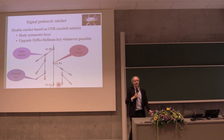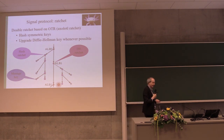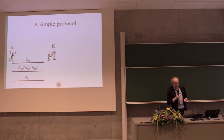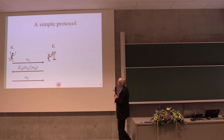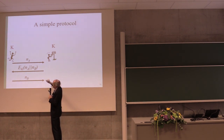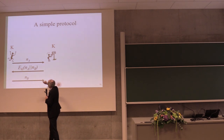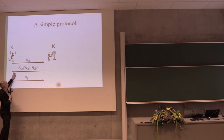Beyond forward secrecy you now also have post-compromise security. To end this part, here is a simple protocol for entity authentication. Alice sends a nonce to Bob. Alice and Bob share a secret key. Bob encrypts this nonce together with his own nonce and sends it back to Alice. Alice decrypts and knows this can only have come from Bob, because only Bob knows this key except for herself. So Bob must be there and active. Alice then takes NB and sends it back to Bob. Simple three-step protocol — mutual entity authentication.